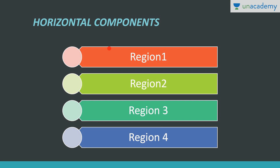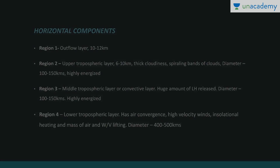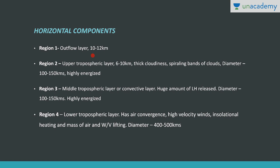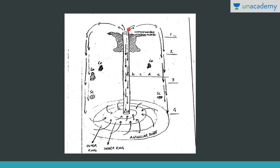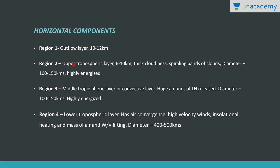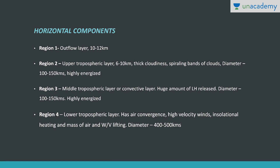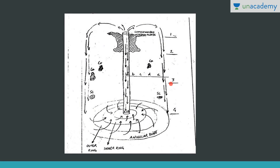The horizontal components of a cyclone can be classified into four regions. Region 1 is the upper layer at an altitude of 10 to 12 km, where winds are flowing outwards — this is the outflow layer. Region 2 is the upper tropospheric layer at 6 to 10 km height, where you will see thick cloudiness, spiraling bands of cloud with diameter in the range of 100 to 150 km — this is a highly energized zone. Region 3 is the middle tropospheric layer where a huge amount of latent heat is released, also known as the convective layer and another highly energized zone.